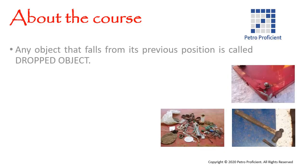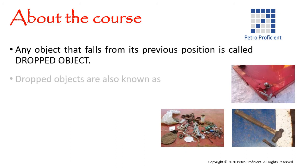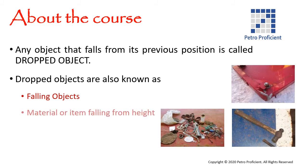Any object that falls from its previous position is called a dropped object. Dropped objects are also known as falling objects, material or item falling from height, and items dropping from heights.